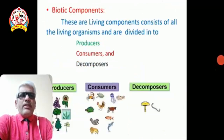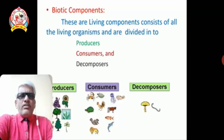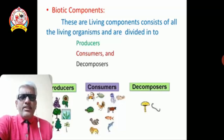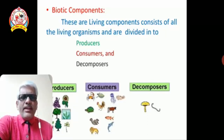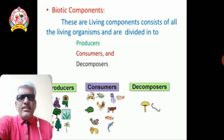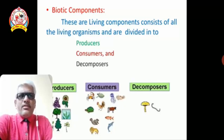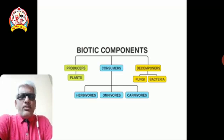Now we come to the biotic component, which is very important as it constitutes the living organisms. Living organisms show important physiological activities such as respiration, reproduction, nervous coordination, excretion, digestion, and locomotion. The biotic component consists of all living organisms present in a particular ecosystem. These living organisms are divided into three categories: producers (consisting of plants), consumers (consisting of animals), and decomposers (consisting of microorganisms).